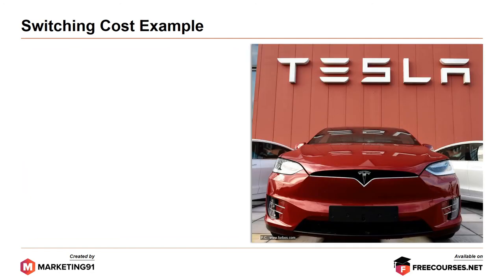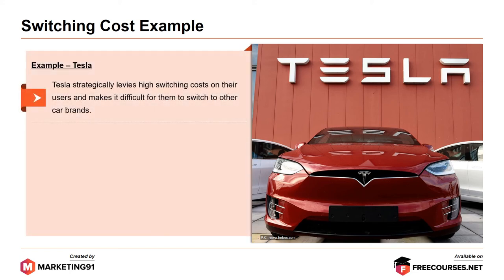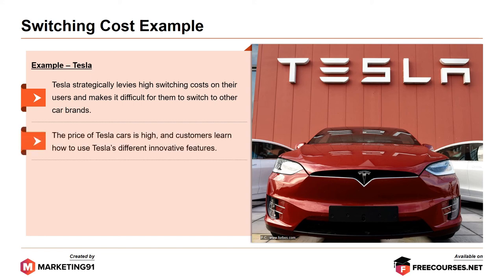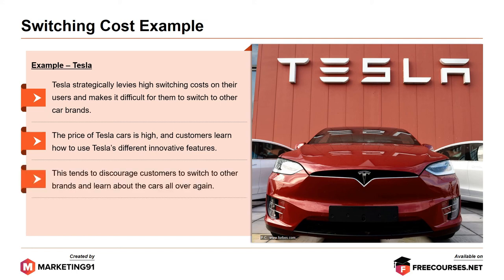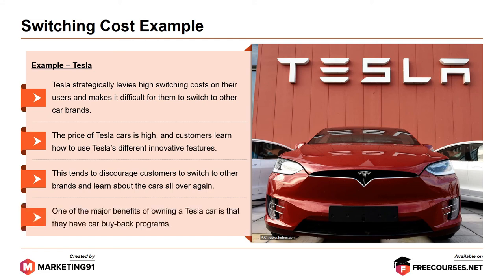The other brand building strong loyalty is Tesla. Tesla strategically levies high switching cost on their users and makes it difficult for them to switch to other car brands. The price of Tesla cars is high and customers learn how to use Tesla's different innovative features, which discourages switching. One of the major benefits of owning a Tesla car is their car buyback programs, which again brings back the customer to the next line of Tesla cars.